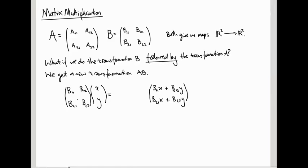So what is the answer here? It's B₁₁X plus B₁₂Y. And then the second entry is B₂₁X plus B₂₂Y. So that's what happens when we do B.